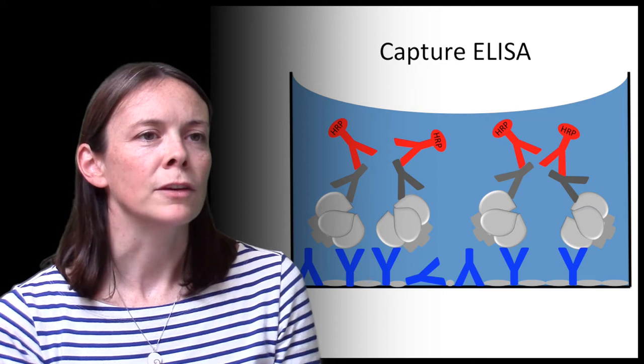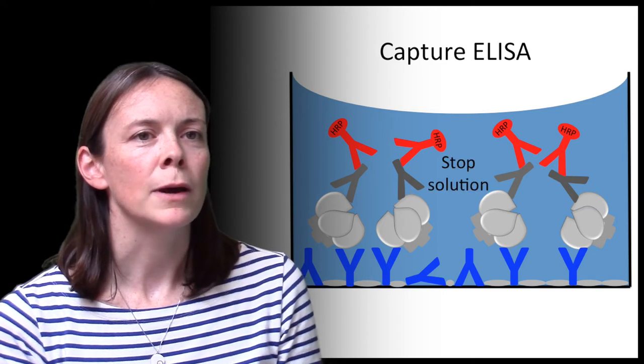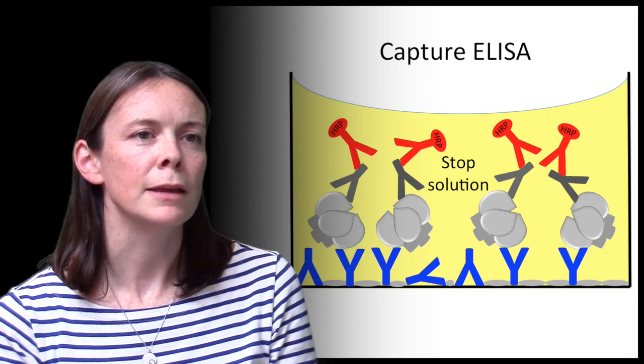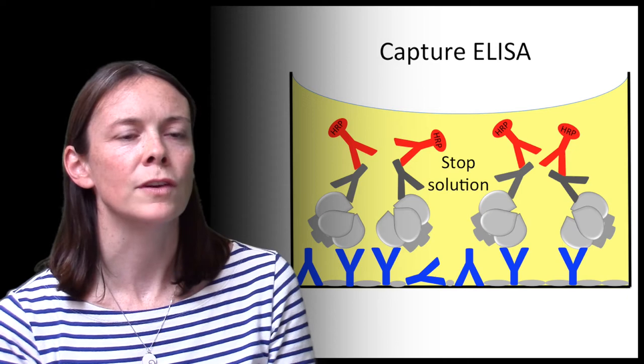To stop the reaction, acid, normally sulfuric acid, is added to the well and the blue reaction product turns to a yellow reaction product which can be quantified in a plate reader at a wavelength of 450 nm.